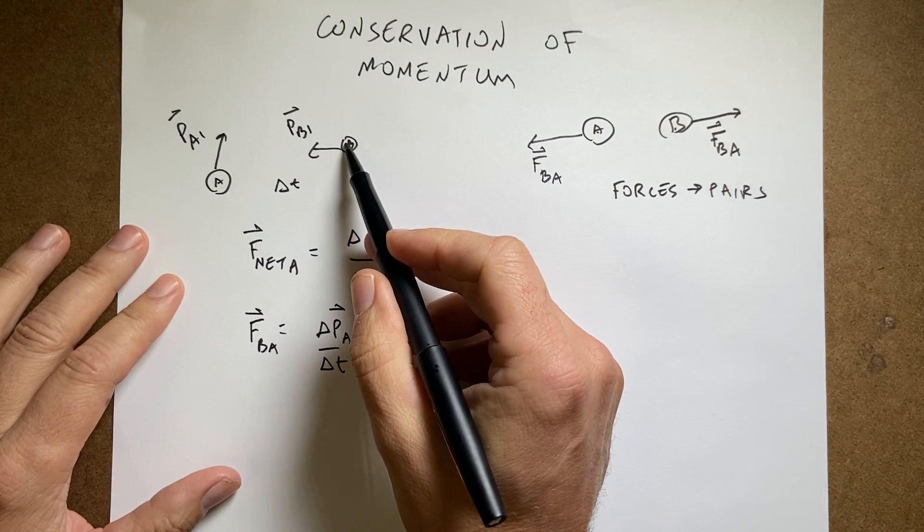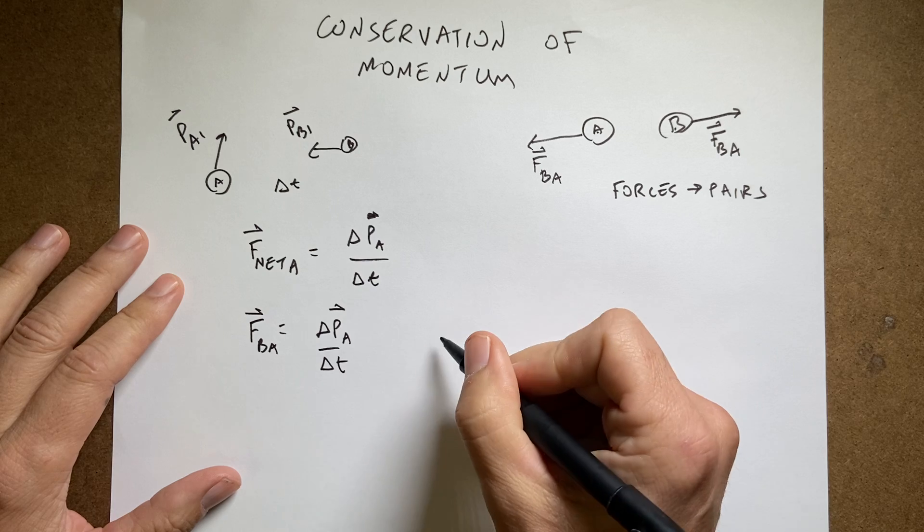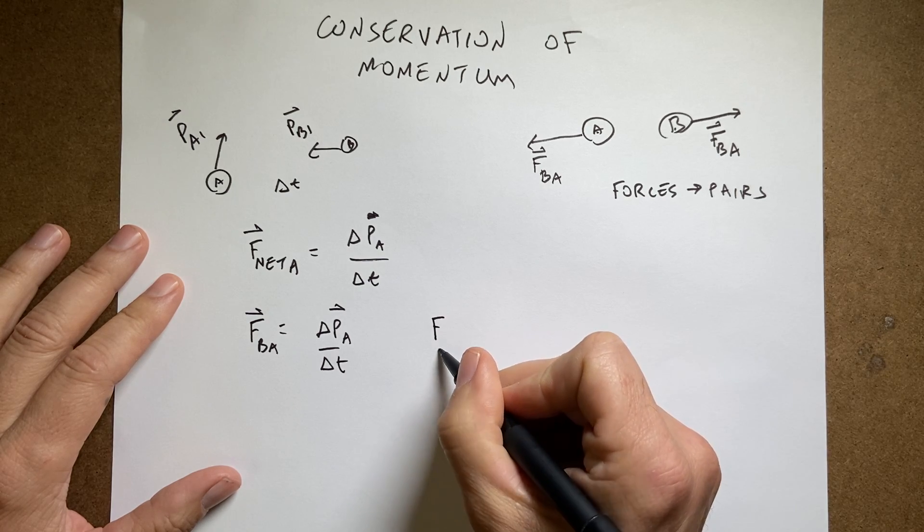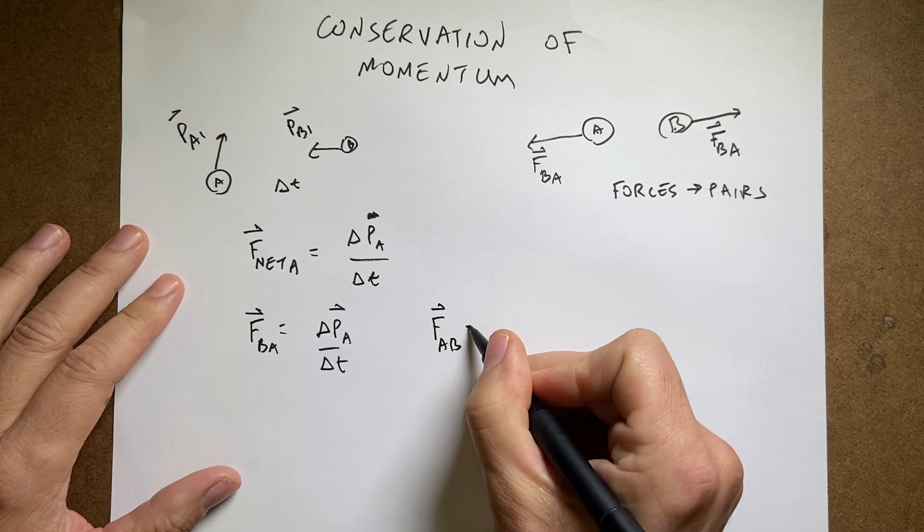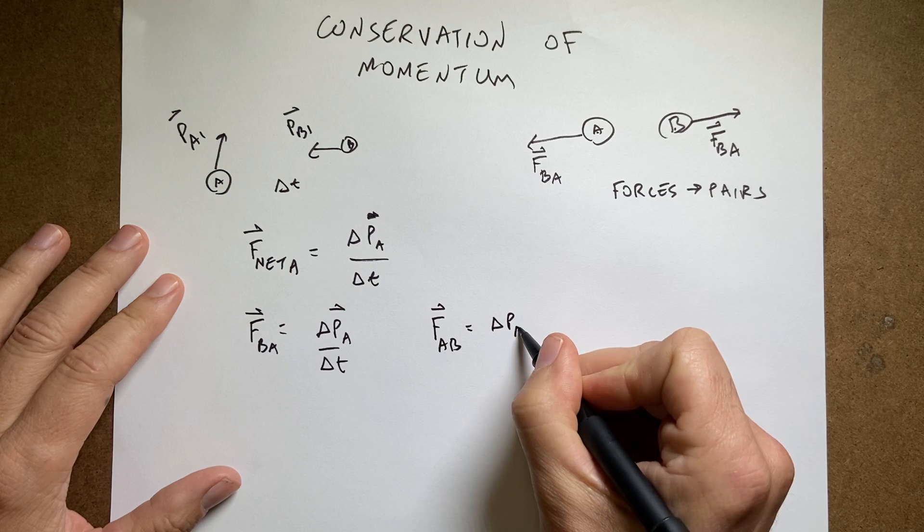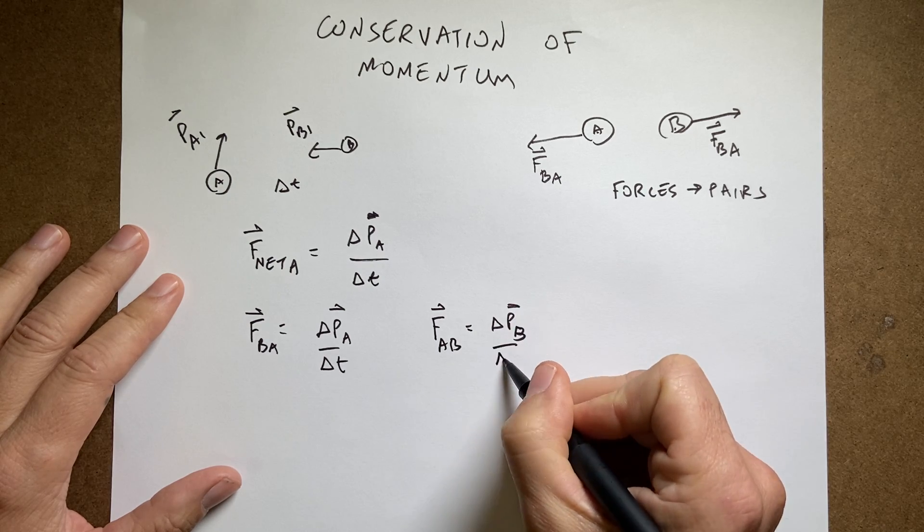Now I can do the same thing for object B. So, FAB is going to be delta PB over delta T.